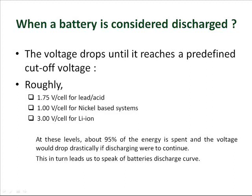When a battery is considered discharged, the voltage drops until it reaches a predefined cut-off voltage. This is roughly 1.75 volts per cell for lead-acid, 1 volt per cell for nickel-based systems, and 3 volts per cell for lithium-ion. At these levels, about 95% of the energy is spent and the voltage will drop drastically if discharging were to continue.